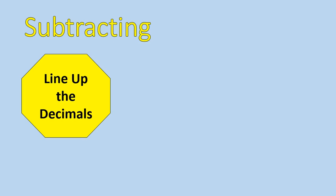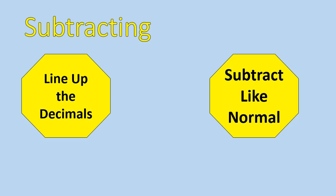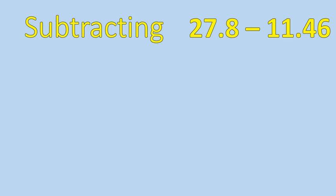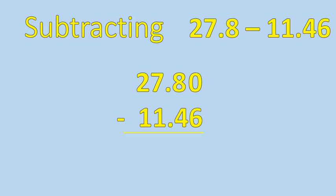All right, let's look at subtracting. With subtracting, you line up the decimals, subtract like normal, and then stop. It's not nearly as fun with a yellow stop sign, but we did it anyway. All right, so here's my question. 27.8 minus 11.46. I'm going to set it up like this vertically, fill in the zeros just like before, and then subtract like normal.